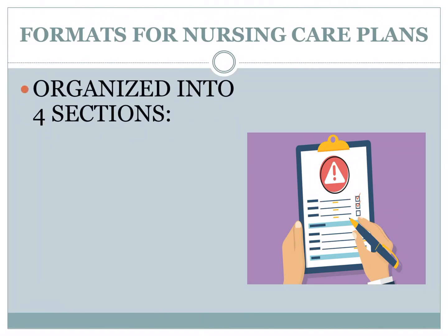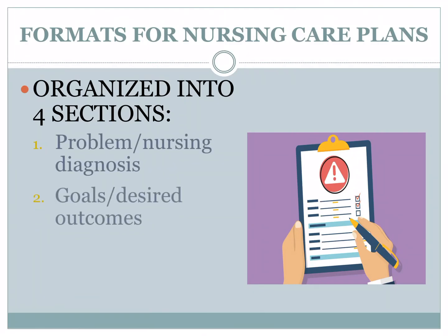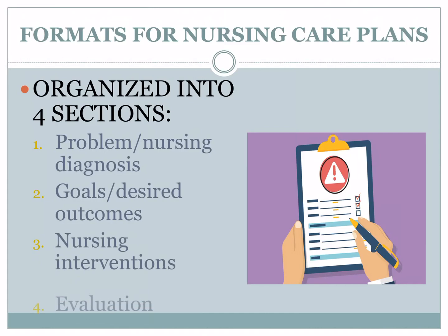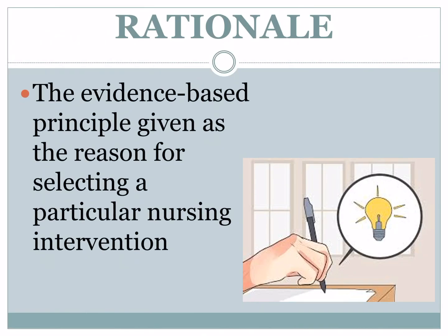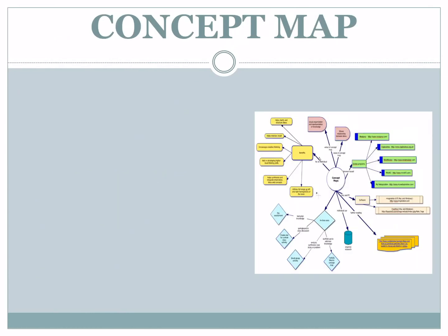Formats for nursing care plans are organized in four sections: the problem or nursing diagnosis, goals or desired outcomes, nursing interventions, and evaluation. For nursing interventions, make sure that you have a rationale — a scientific reasoning — for why you have to perform such an action. The rationale is the evidence-based principle given as the reason for selecting a particular nursing intervention.